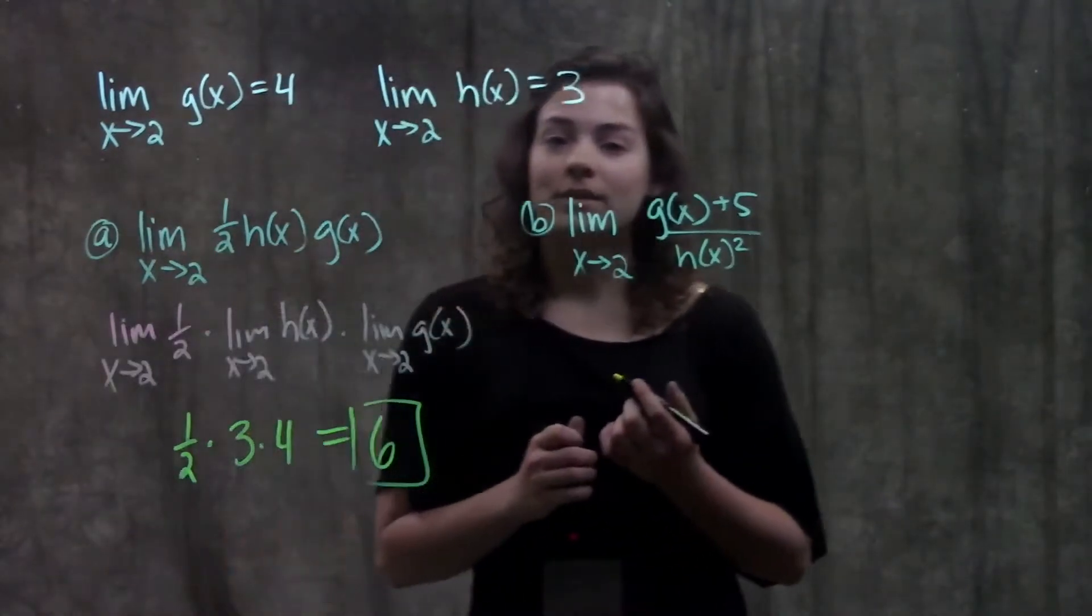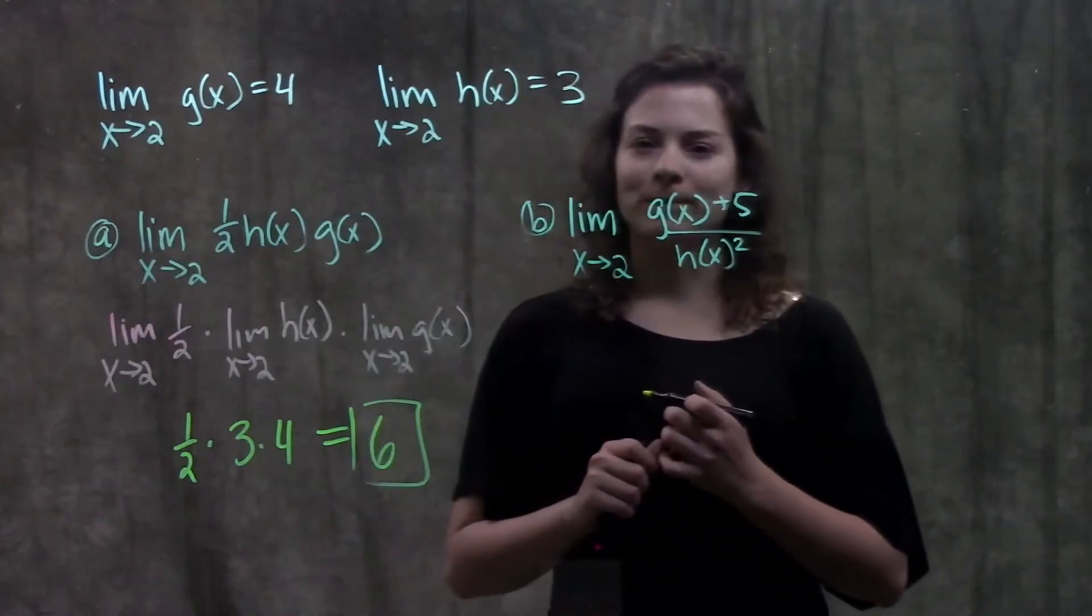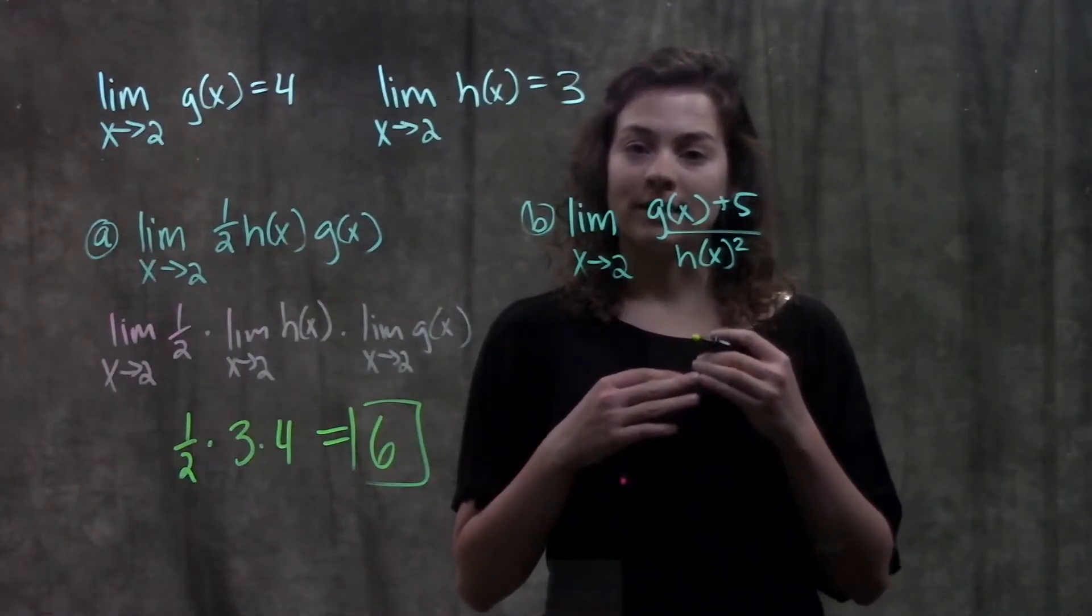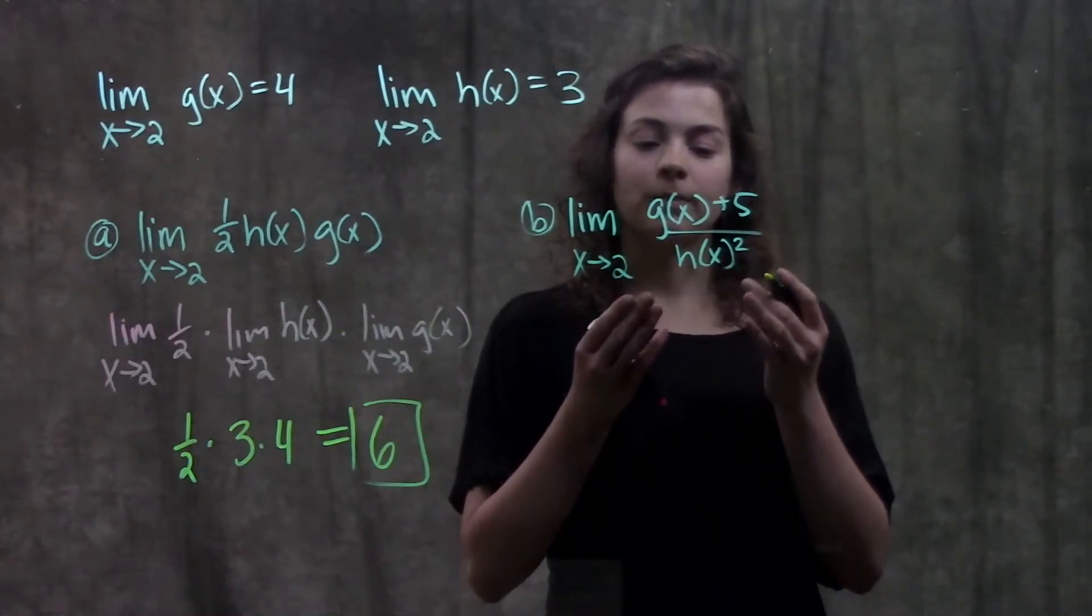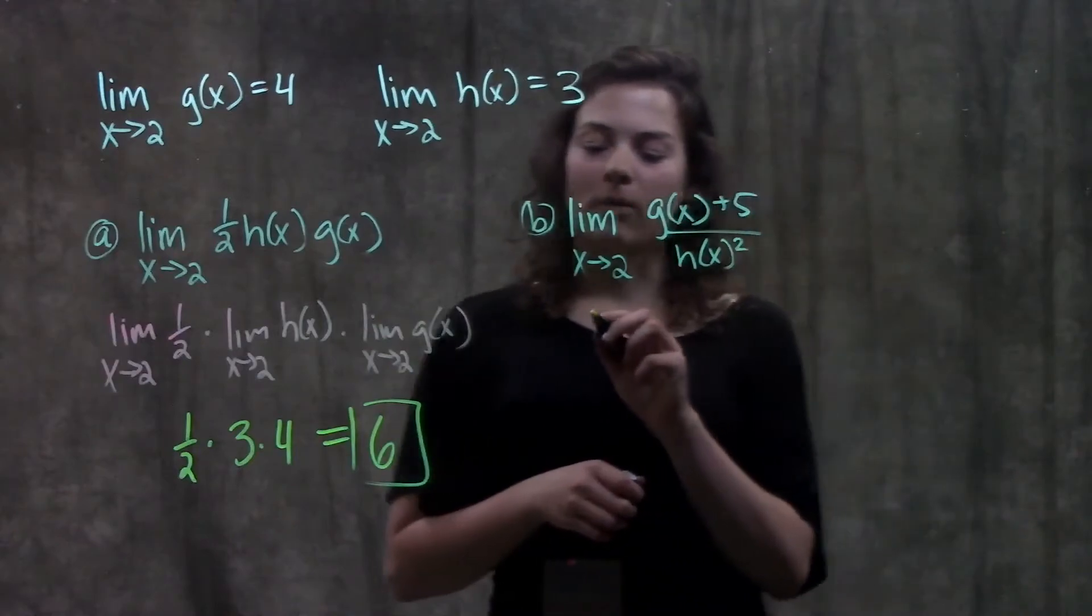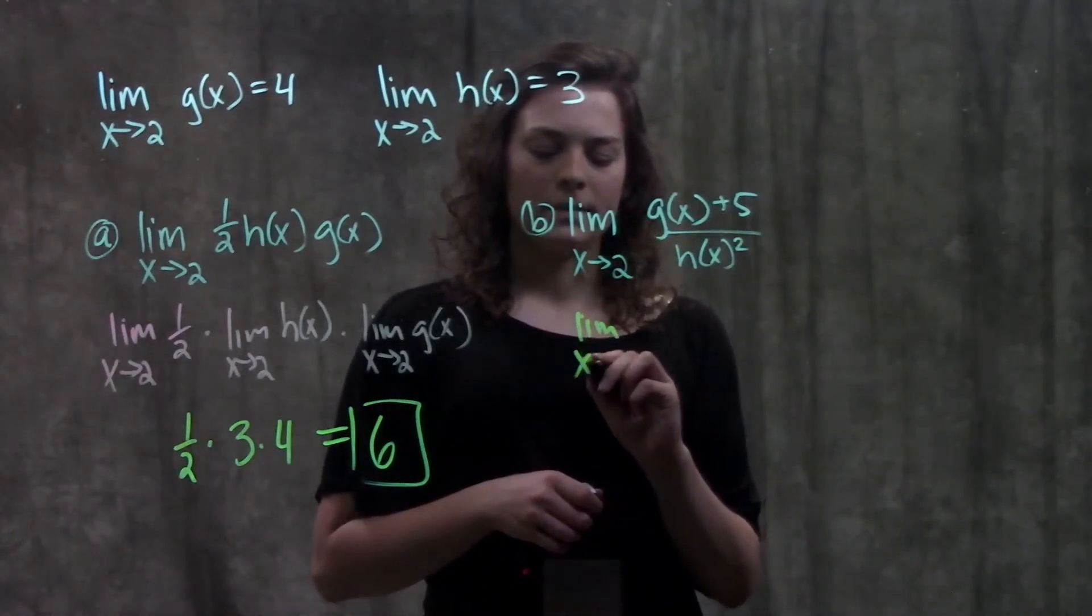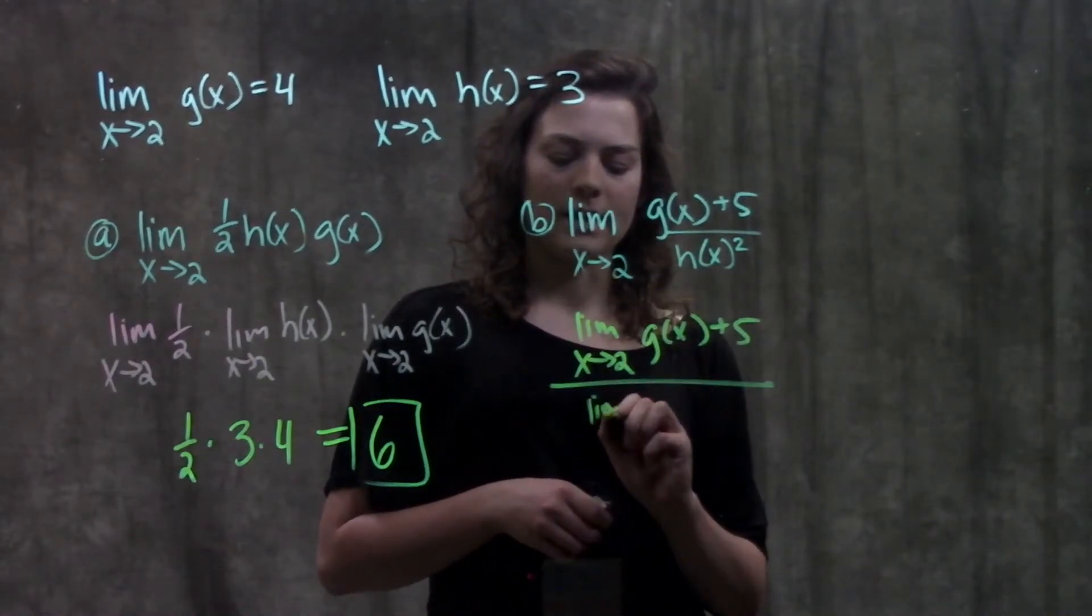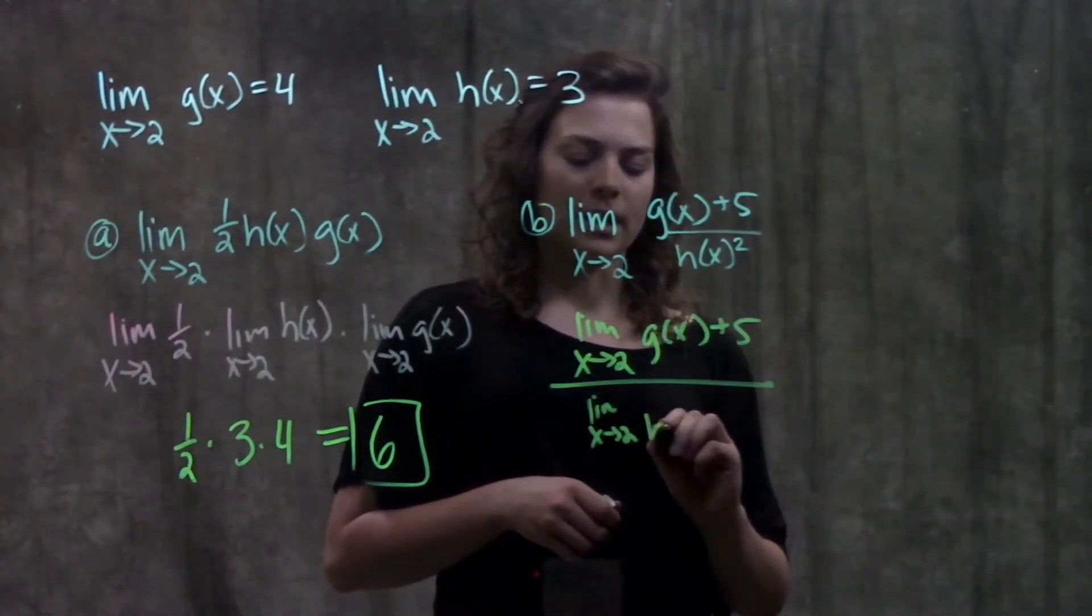Moving on to part B, we're going to do the same thing. There's just a little bit more to split up. So here I'm going to start with the biggest part that I see to split it up. The biggest part I see is one thing being divided by another. So I'm going to use my quotient rule and split this up into my numerator over the limit as x approaches 2 of my denominator.